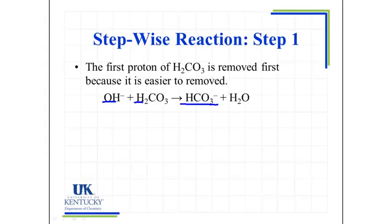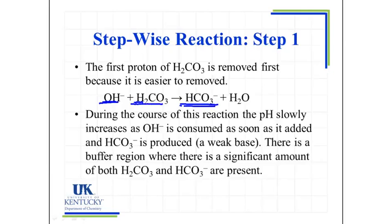So we begin by adding some base. It'll convert some of the acid over to its conjugate base. And we will have a range where we'll have a buffer, because there will be both the H2CO3 and the HCO3- present in solution. And we'll see that buffer occur, so it'll be a gradual increase.